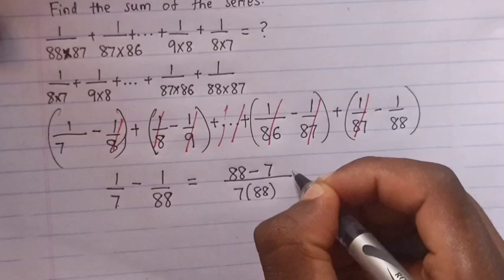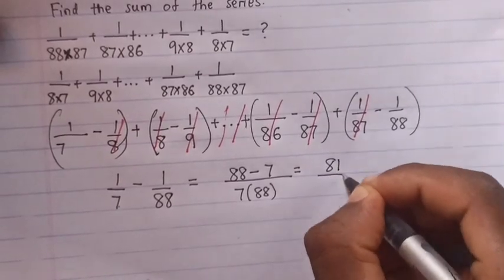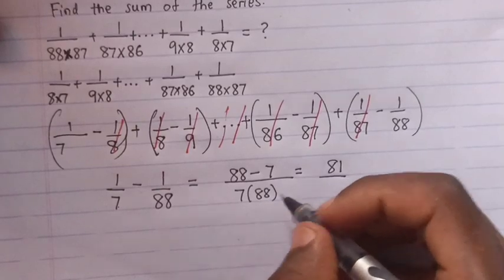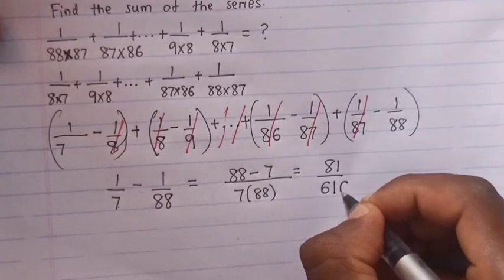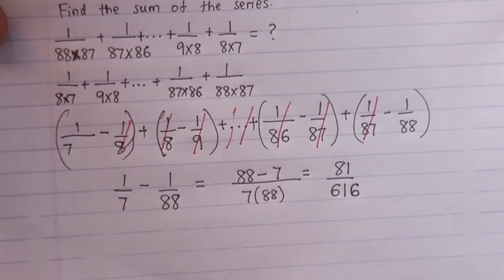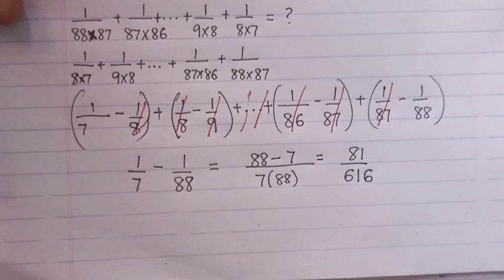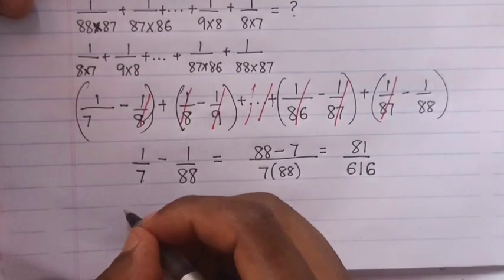This is 81. 7 times 88 is 616. So that's the simplified answer.